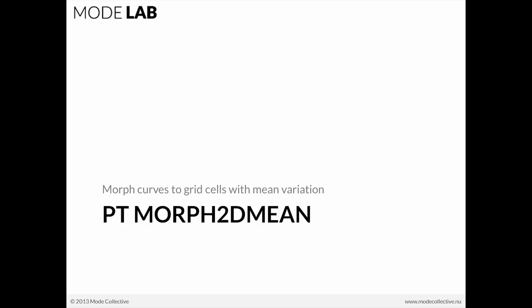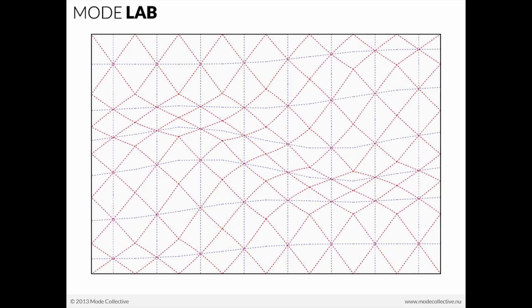The alternative to distorting your panels using something like a curve and pushing and pulling it around is to actually distort the component using something called morphing — specifically morph2D mean — which would allow you to begin to deviate from one state to another.